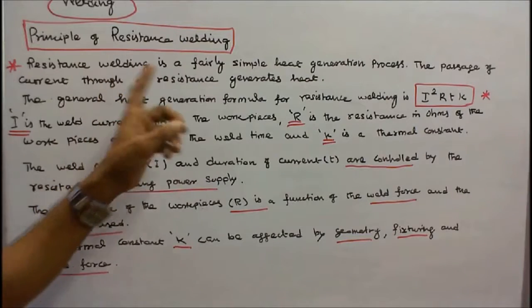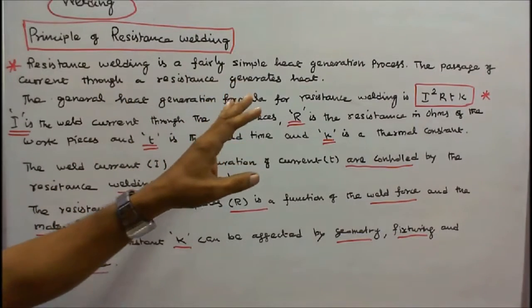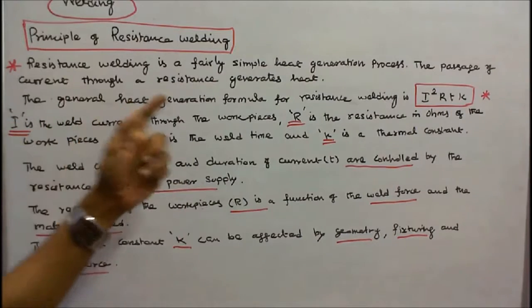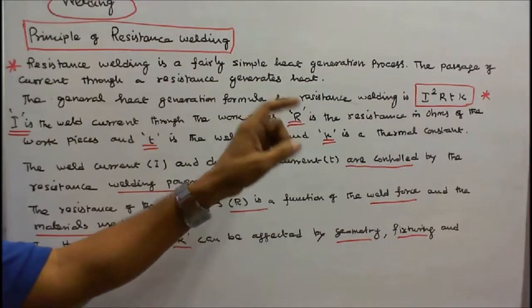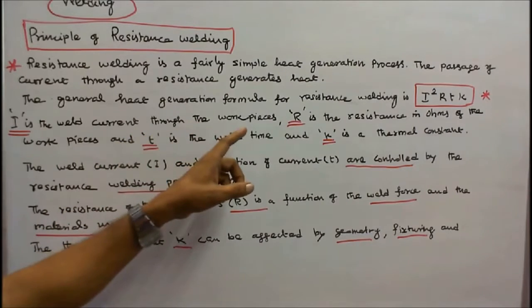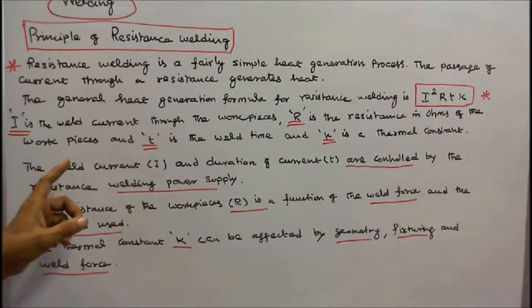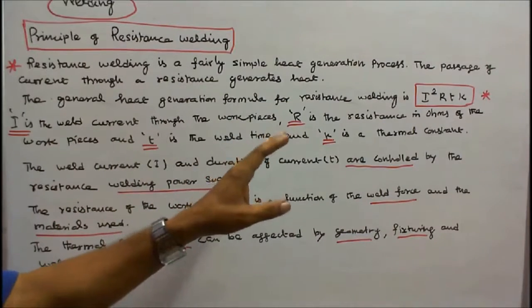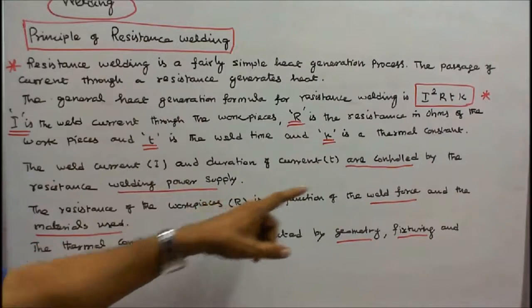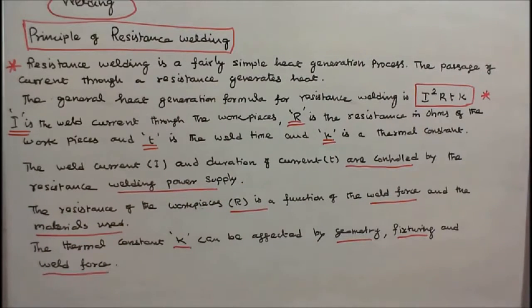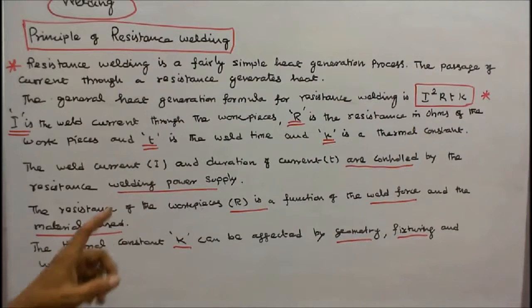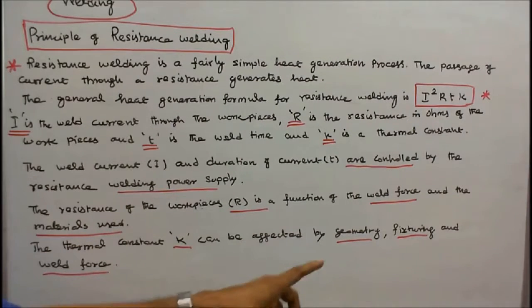Principle of resistance welding. Resistance welding is a fairly simple heat generation process. The passage of current through a resistance generates heat. The general heat generation formula for resistance welding is I²RT×K, where I is the weld current through the workpieces, R is the resistance in ohms of the workpieces, T is the weld time, and K is the thermal constant. The weld current I and duration of current T are controlled by the resistance welding power supply. The resistance of the workpieces R is a function of the weld force and the materials used. The thermal constant K can be affected by geometry, the fixturing, and weld force.